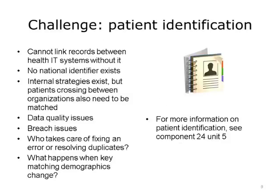A third challenge is related to matching patients. How does the system identify a patient? And then when exchanging information with other systems, how do the systems determine that they are communicating about the same patient? We cannot link records between health IT systems without matching patients. If each person had a national identifier that uniquely identified them to the health care system, such as a social security number in financial transactions, this would not be a problem. There have been many discussions about the pros and cons of having a national patient identifier. The primary argument against a national patient identifier is that it could compromise privacy. Internal strategies exist today in numerous organizations to match identifiers within organizations, however they do not often exist between organizations.